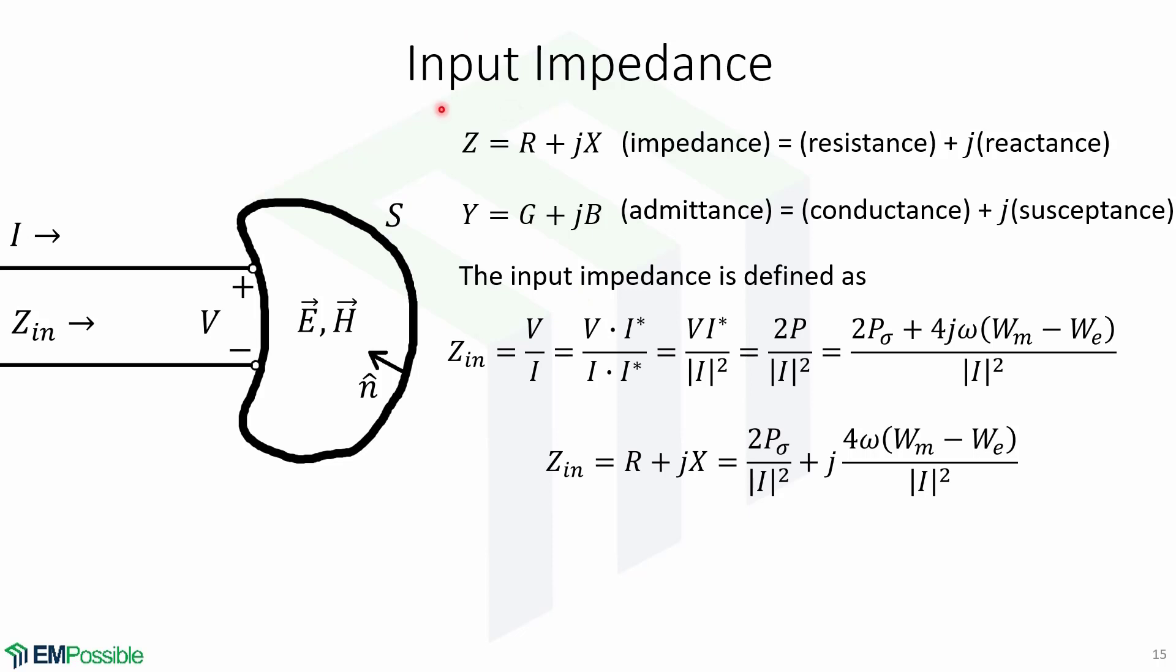Now we will derive the input impedance. Recall that the impedance is equal to the real part which is the resistance plus an imaginary part which is the reactance. In the same case, the admittance is equal to the real part which is conductance plus an imaginary part which is susceptance.